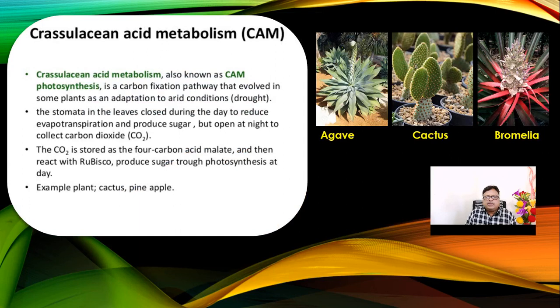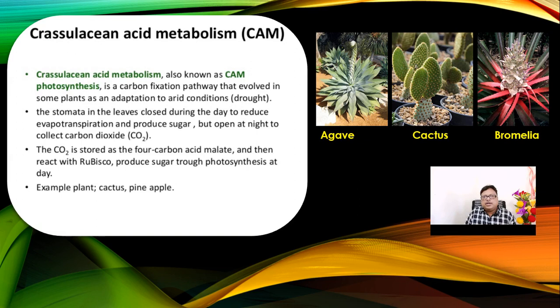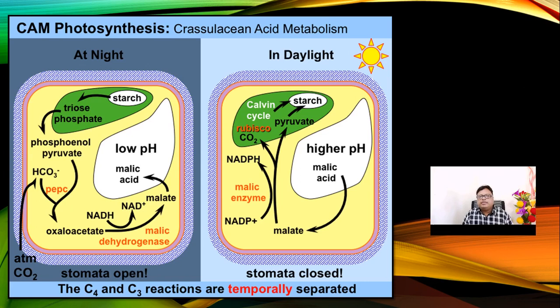The last pathway is Crassulacean Acid Metabolism (CAM). Plants like agave, cactus, and bromeliads are adapted to arid conditions. During the day, environmental conditions are very unfavorable, so stomata get closed. The stomata open during the night to reduce water loss and conserve water — to prevent evaporation. In CAM plants, CO2 is stored as the 4-carbon acid malate, and then reacted with RuBisCO to produce sugar through photosynthesis during the day. Examples are cactus and pineapple. Crassulacean acid metabolism is related with the opening and closing of the stomata.